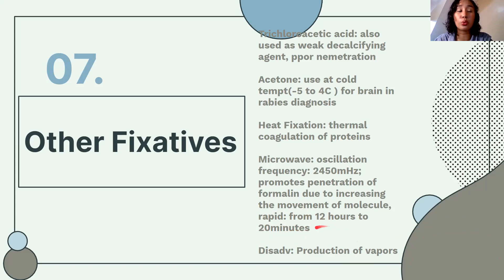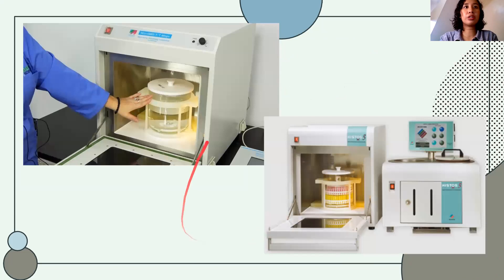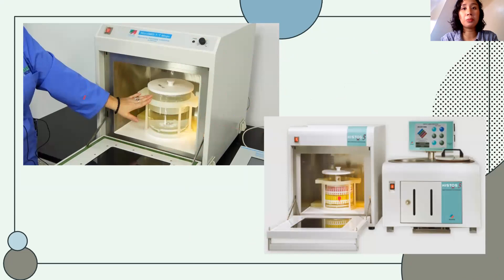You must be careful when subjecting tissues to heat because you are also accelerating the degeneration of unfixed tissue. This is your microwave for histopathology — you place the cassettes in a container and put it in the microwave. Some microwaves used for this purpose rotate to agitate.